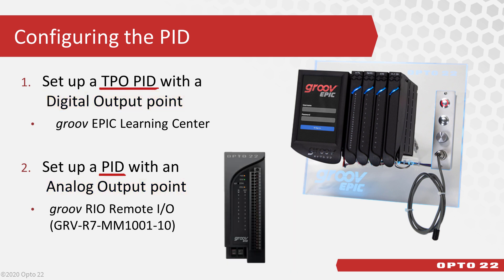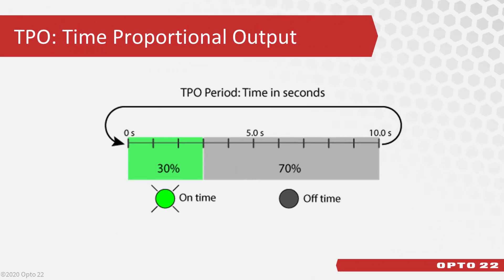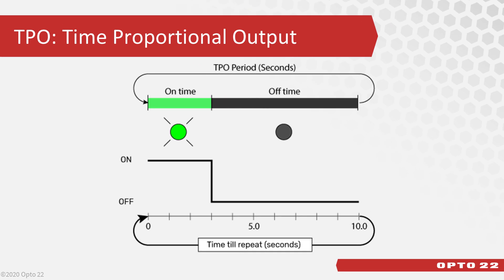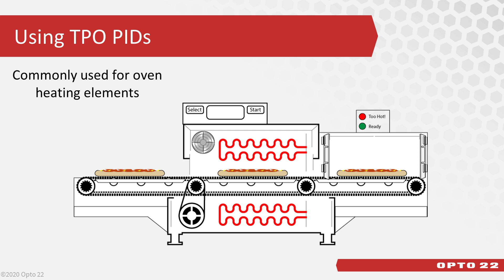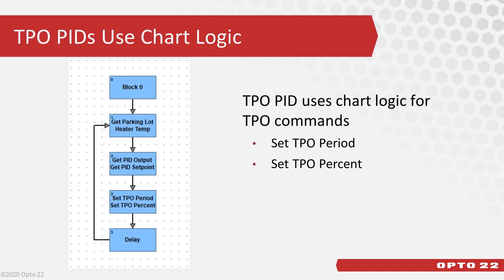Let's talk about these two types of PIDs a little more. TPO stands for Time Proportional Output — based on a period of time, what percentage of that time will it be on? You'll set up a period and a percentage for the TPO. For example, if your TPO's time period is set to 10 seconds and the TPO percentage is set to 30%, then the digital output point is turned on for 3 seconds and then turned off for 7 seconds. The TPO PID controls the digital output so that the temperature stays near the setpoint. TPO PIDs are very commonly used, especially to control a heating element like for an oven, or a solenoid to control flow or pressure.